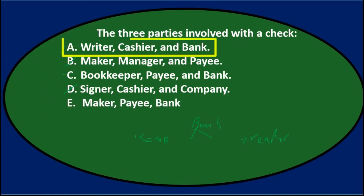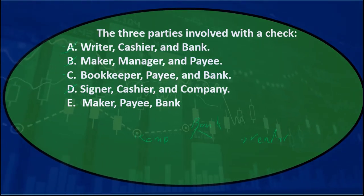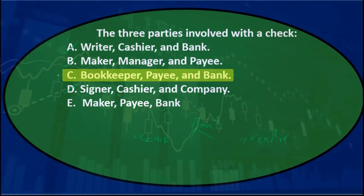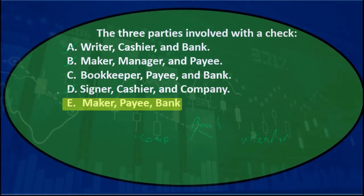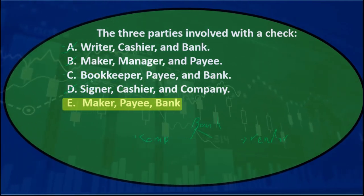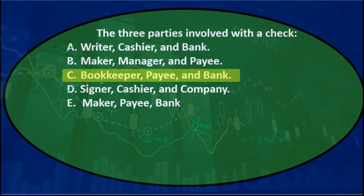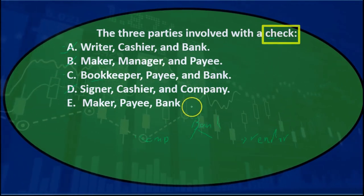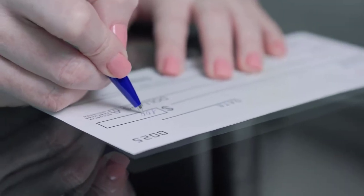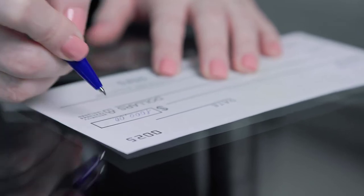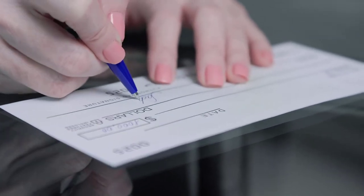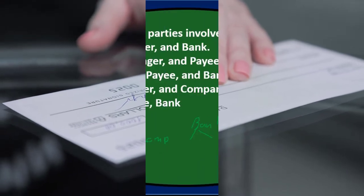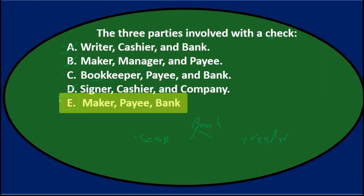A seems repetitive with writer and cashier — we don't have a payee there. Between C and E, the difference is that bookkeeper is a really broad term. If we're talking about any check, it might just be an individual writing a check, so whoever the maker of the check is — whether a bookkeeper, a company, or whoever is responsible — maker is a more broad characteristic. So E would be the better choice. The three parties involved in writing a check: E, maker, payee, and bank.